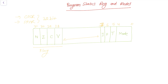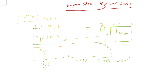In general, the 32-bit register is divided into four groups of 8 bits each. The lowest 8 bits (bits 0 to 7) are known as the control field. Then the next 8 bits are the extension field, then the status field, and finally the top 8 bits are the flags field.